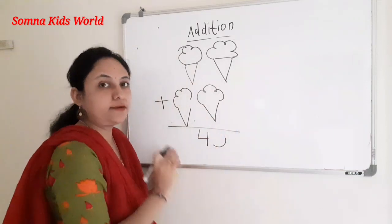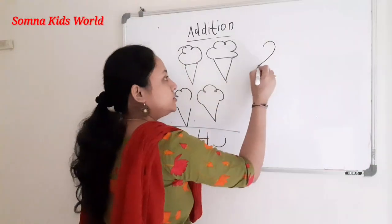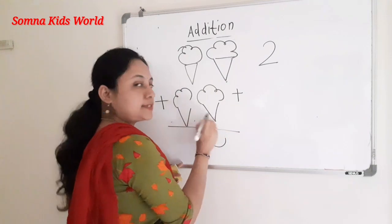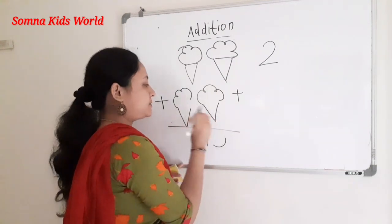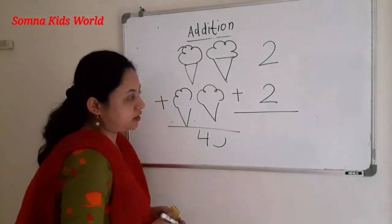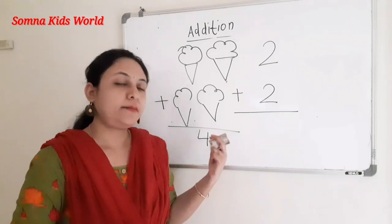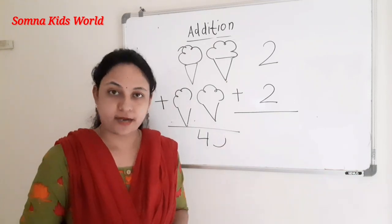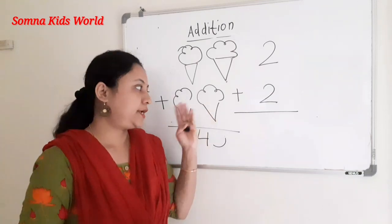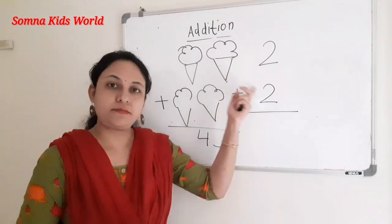Now I am going to do this through the vertical method. Here we are having two ice creams plus two ice creams. Every time you may not be able to draw pictures, so you have to use the mind method. This is the picture method, and this is vertical addition — you can also call it the mind method.